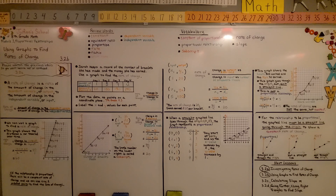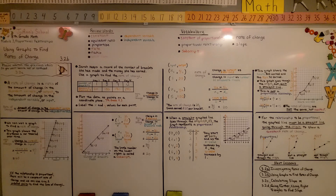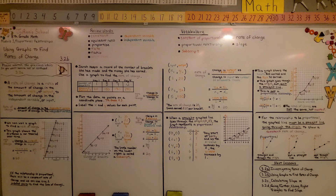Back in 7th grade math, lesson 4.3, we learned about proportional relationships and graphs. If you've forgotten those lessons or never learned them, there will be links in the description so you can watch them quickly. You need to know how to do this because you'll have difficulty moving forward if you don't. Have a wonderful day, and join me for the next lesson.